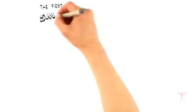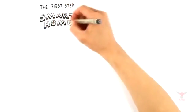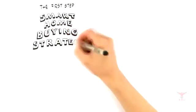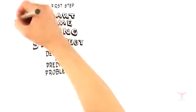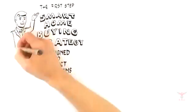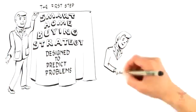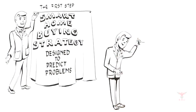The first step to gaining this advantage starts with having a smart home buying strategy. Like any plan or strategy, it is designed to predict problems. In this case, ones that stand in the way of you finding and buying your perfect home. Unfortunately, most buyers don't know they have this option and start the buying process completely wrong.